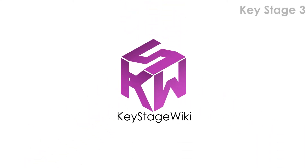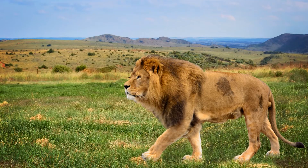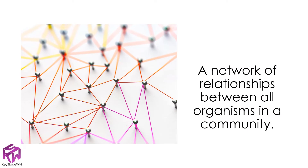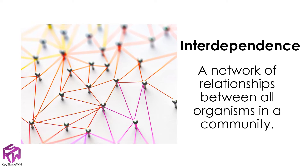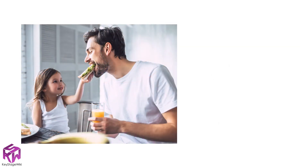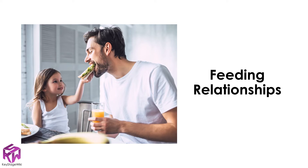Welcome to Key Stage Wiki. What would happen to the population of grass if all the lions became extinct? That might sound like a strange question at first, but when you think about it, all organisms on earth are connected. There is a network of relationships between all organisms in a community — this is known as interdependence. One way in which organisms are linked is by feeding relationships.